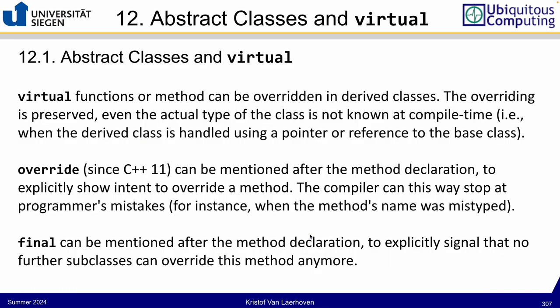We can explicitly indicate this with the 'override' keyword, which we've already seen in the polymorphism chapter. 'override' tells the compiler you're explicitly overriding 'print_name'. If you mistype the name, the compiler catches it — it knows you intended to override a method that doesn't exist in the parent class. That's the main reason to use 'override'.